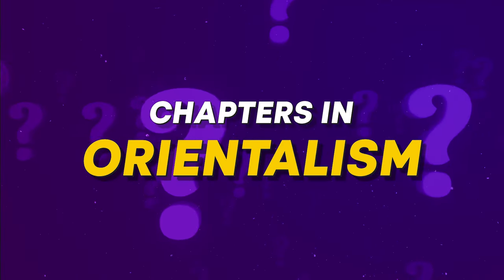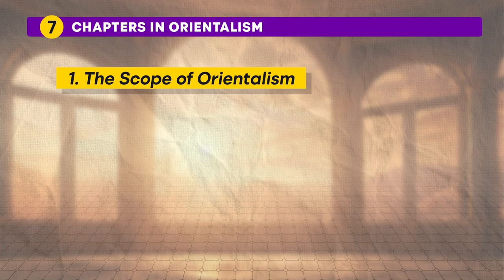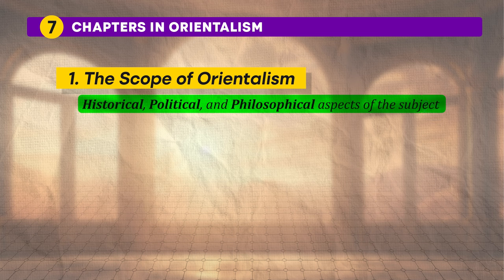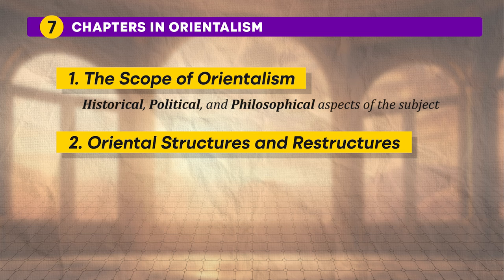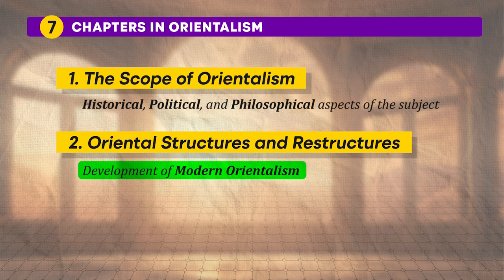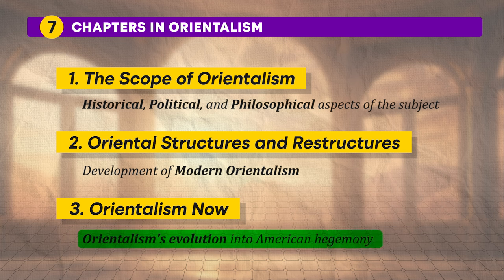Let's go through the chapters of Orientalism. The book is divided into three main chapters. The first, 'The Scope of Orientalism,' delves into historical, political and philosophical aspects, emphasizing Europe's textual fascination with the East, particularly the classical over the contemporary. The second chapter, 'Oriental Structures and Restructures,' chronologically tracks the development of modern Orientalism and examines how it influenced Western perceptions of the Arab Middle East. The third chapter, 'Orientalism Now,' examines the period from around 1870 marked by significant colonial expansion into the Orient, and discusses Orientalism's evolution into American hegemony, addressing the social and intellectual realities of Orientalism in the USA.